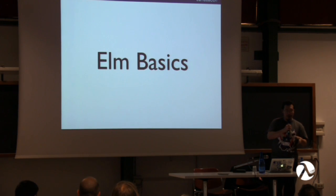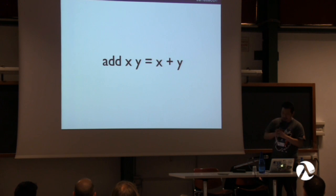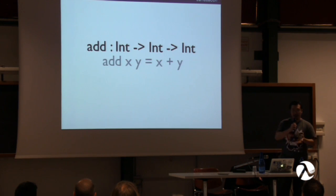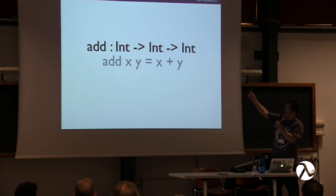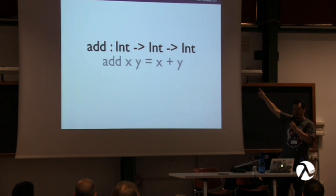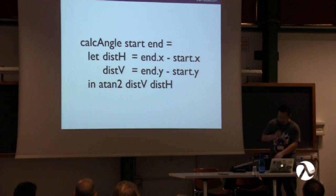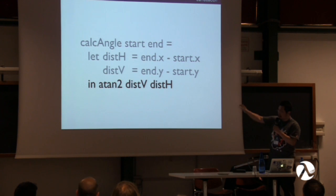That's a high-level overview of Elm and functional reactive programming. Now let's look at some basic language syntax. This is how you define a function. Optionally, you can specify a type signature — in this case, the function 'add' takes an integer, then another integer, and returns an integer. When you see type signatures like that, the very last type is always the return value. When you need to define intermediate results, you use the let block and then the in block.